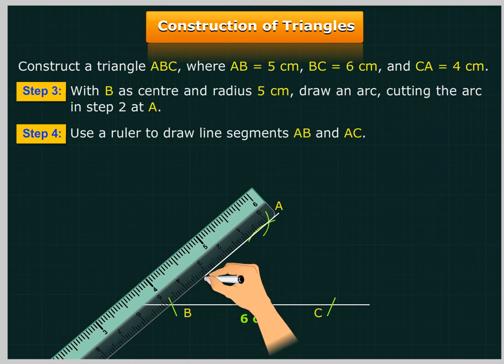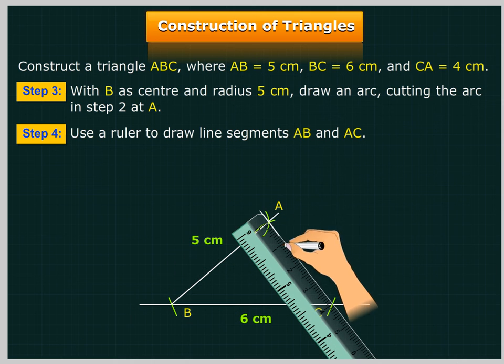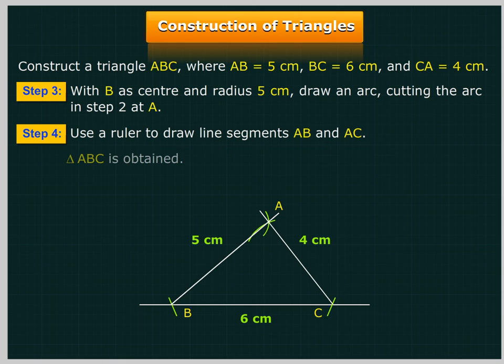Use a ruler to draw line segments AB and AC. Triangle ABC is obtained.